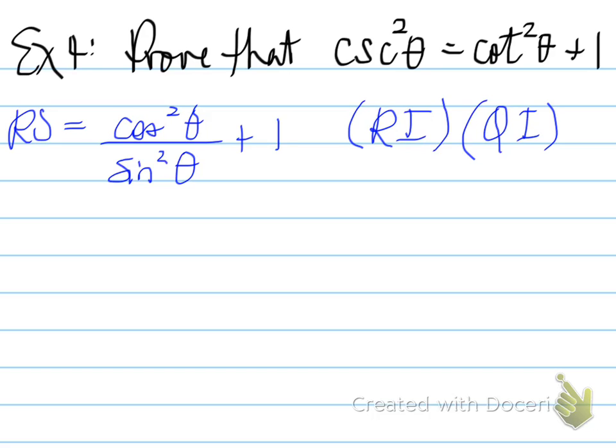Cotangent is equal to one over tangent. One over tangent means the reciprocal of tangent. Tangent using QI is equal to sine over cos. So the reciprocal of sine over cos is cos over sine. Cos over sine is the equivalent expression to cotangent. We used RI and QI to get that value.